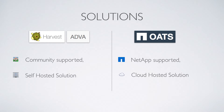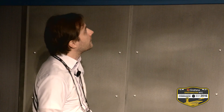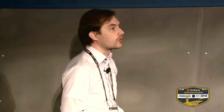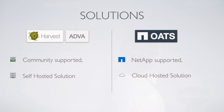We're going to talk about two different projects: Harvest and ADVA, which are in the same space, and Oats, which is a different project in a different team at NetApp. It's interesting — I saw a demonstration of that product and realized other people were doing stuff with Grafana at NetApp. Harvest and ADVA are community-supported and not directly supported by NetApp — it's a self-hosted solution.